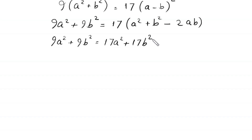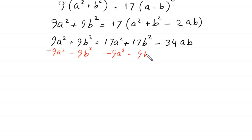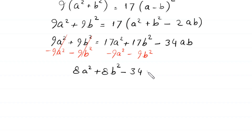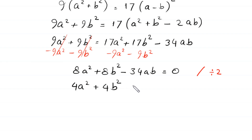We subtract 9a² and 9b² from both sides, so those terms cancel, leaving 8a² + 8b² - 34ab = 0. Dividing the whole equation by 2 gives 4a² - 17ab + 4b² = 0.